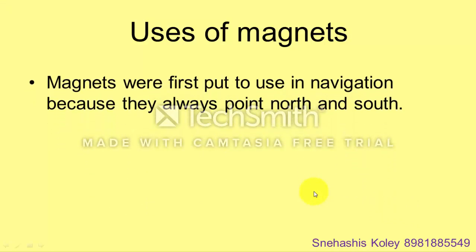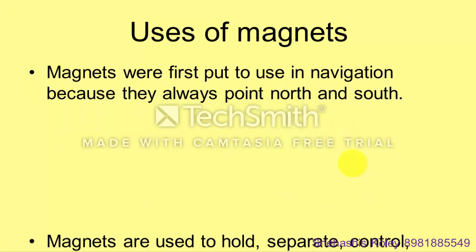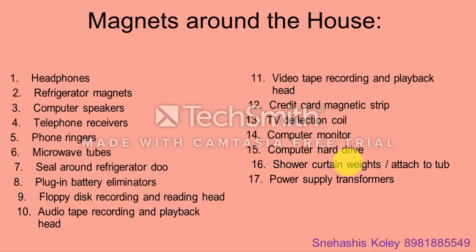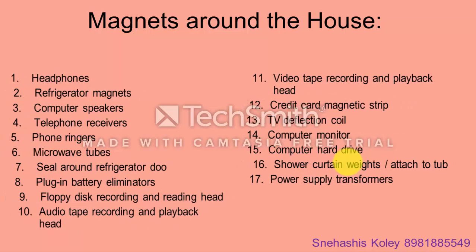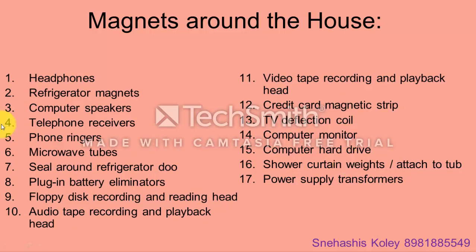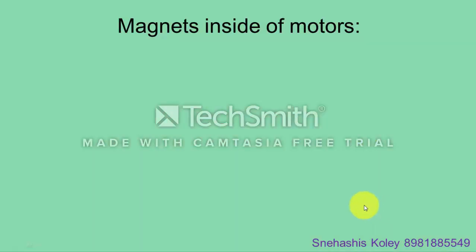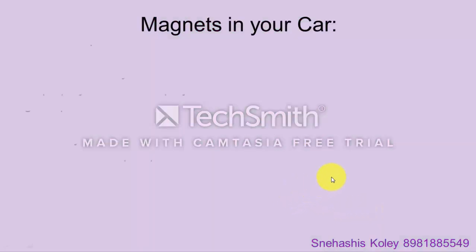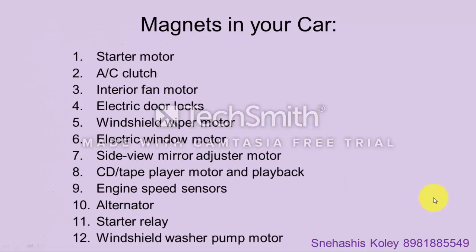A few uses of electromagnets are listed. As you can see, in our homes there are many appliances in which electromagnets or magnets are used. Magnets are also used in making motors, and there are further uses of magnets related to car systems.